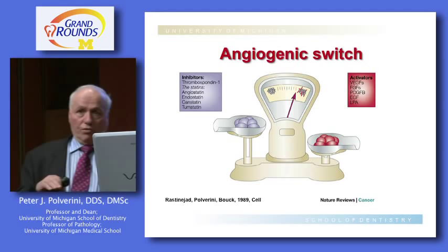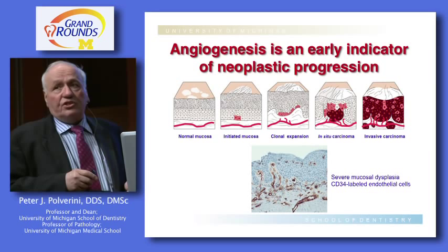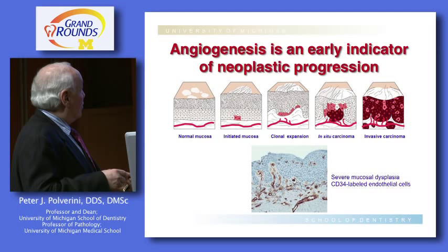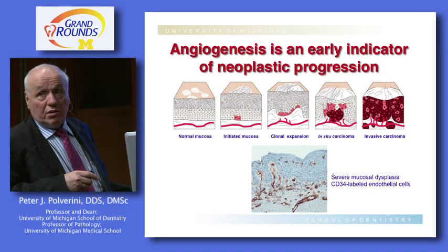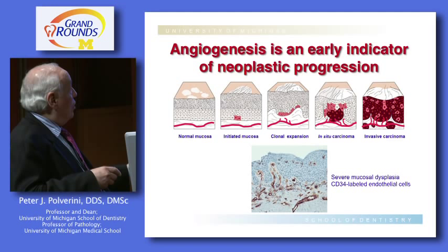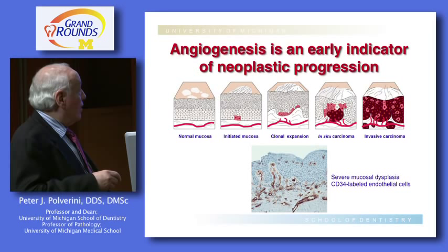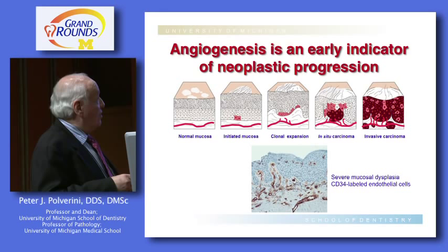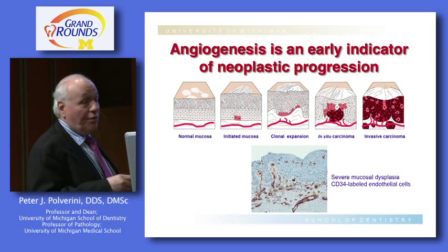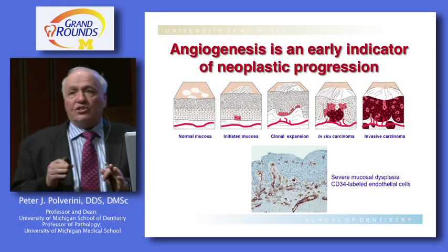Angiogenesis is also an early indicator of neoplastic progression. At a stage where you're getting early clonal expansion of dysplastic or early neoplastic cells, you can actually detect new blood vessel growth. This may exist at low levels for weeks or months before resulting in overwhelming tumor growth. This is an example of a dysplastic tumor section with CD34-labeled endothelial cells showing blood vessel growth even before invasion into surrounding tissue.